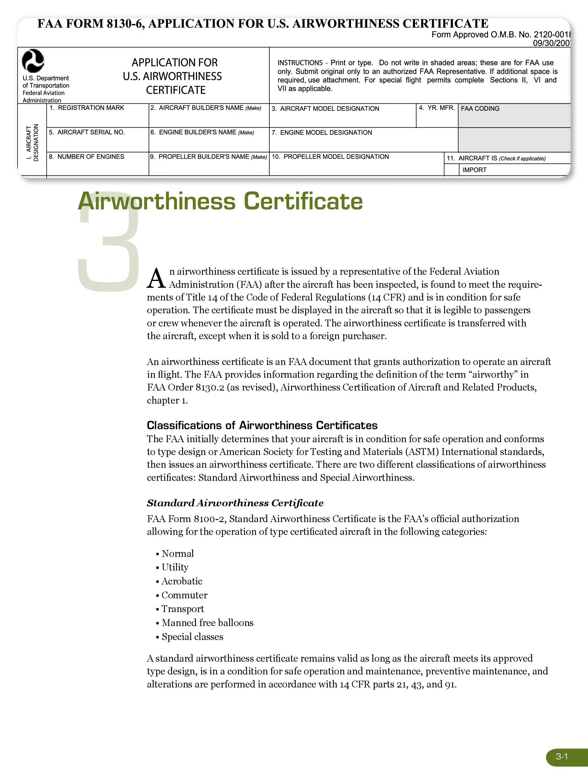Classifications of Airworthiness Certificates: The FAA initially determines that your aircraft is in condition for safe operation and conforms to type design or American Society for Testing and Materials, ASTM, international standards, then issues an airworthiness certificate. There are two different classifications of airworthiness certificates: standard airworthiness and special airworthiness.